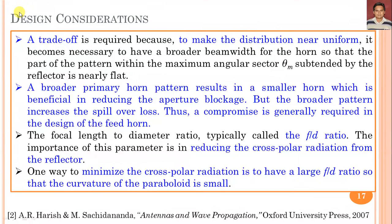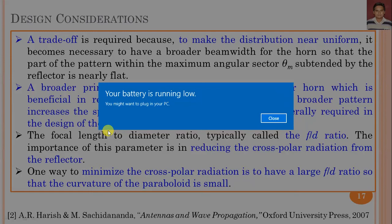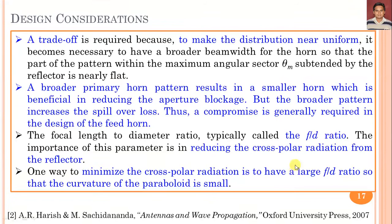There is a trade-off required because to make the aperture distribution near uniform, it is necessary to have a broader beam width for the horn, such that the horn pattern covers approximately three times the angular sector subtended by the reflector. A broader primary horn pattern results in a smaller horn, which is beneficial in reducing aperture blockage, but the broader pattern increases spillover loss. Thus, a compromise is generally required in the design of the feed horn.